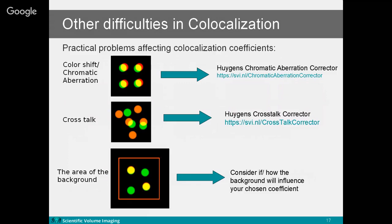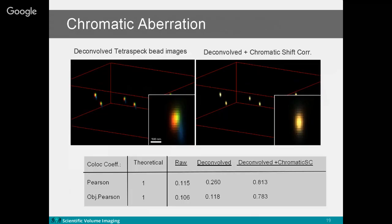Chromatic aberration: this slide shows an example with 100-nanometer multi-color beads, both images already deconvolved. On the left you can clearly see chromatic aberration; on the right the chromatic aberration is corrected. You can see how chromatic aberration is reflected in the co-localization coefficients — this is why we always need to correct for chromatic aberration before performing co-localization analysis.